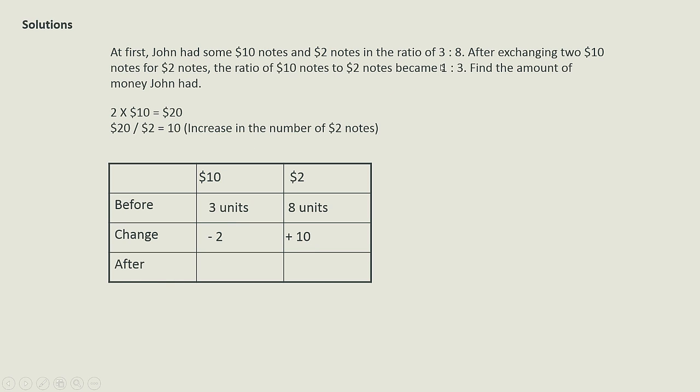And afterwards the ratio became 1 to 3, but instead of writing 1 unit to 3 units, I write as 1 part to 3 parts. The reason is because 1 unit is different from 1 part; the value is different.